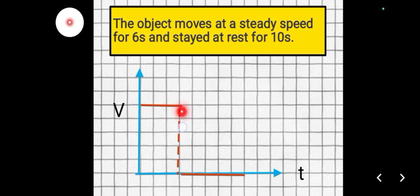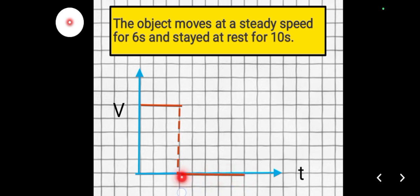After 6 seconds, the object is at rest. At that particular time, the slope runs across the horizontal axis, suggesting the object is not in motion — it stays at rest for 10 seconds.